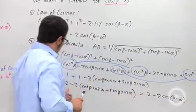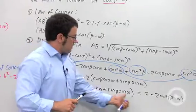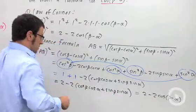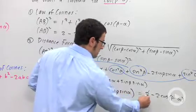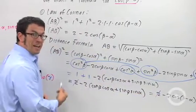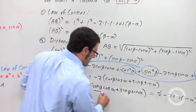We can cancel these 2's. And then divide both sides by negative 2. And what we'll get is this: